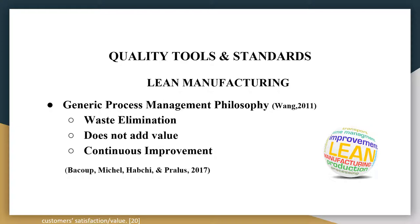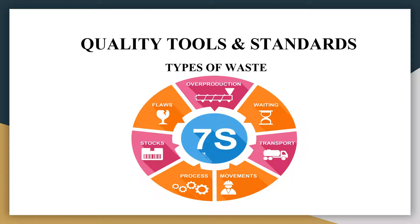Seven types of waste that were identified were: overproduction — this is the most dangerous type of waste because it can incur other costs such as storage. Waiting results from poor flows, whether it be design or information, where goods aren't moving. Transportation means the movement of goods from one location to the next, which may result in goods being lost, stolen, or even damaged.